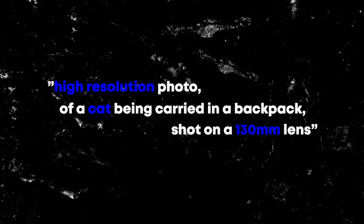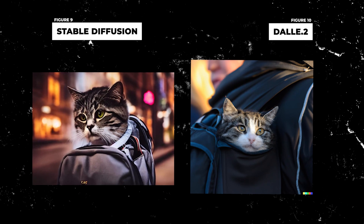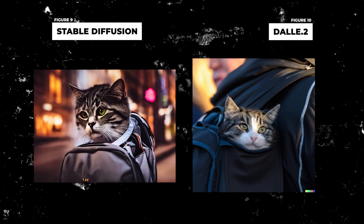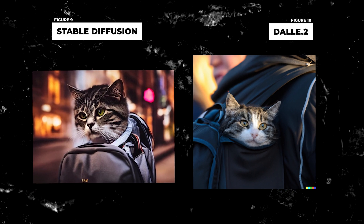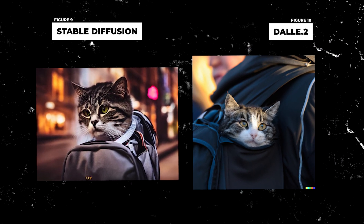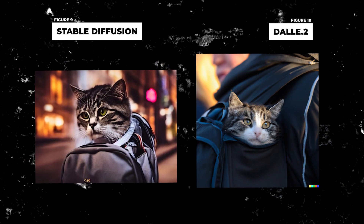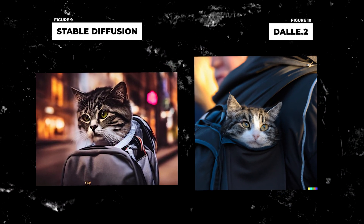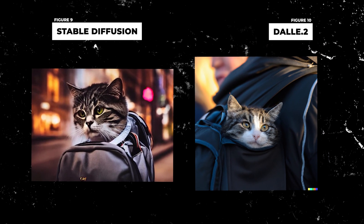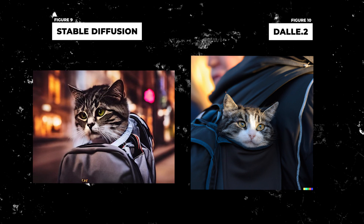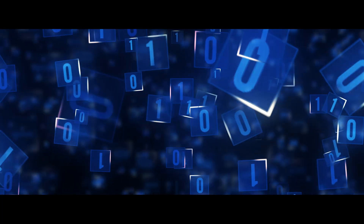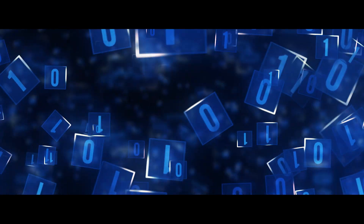How about something more complicated? Let's see what happens when you add a camera setting to your prompts: 'High-resolution photo of a cat being carried in a backpack, shot on a 130mm lens.' The detail on both photos is amazing. The photo created by DALL-E 2 is slightly better because the AI actually put the cat in the backpack and it looks more real compared to Stable Diffusion's image. This is a great example of how well AI understands the world around us.